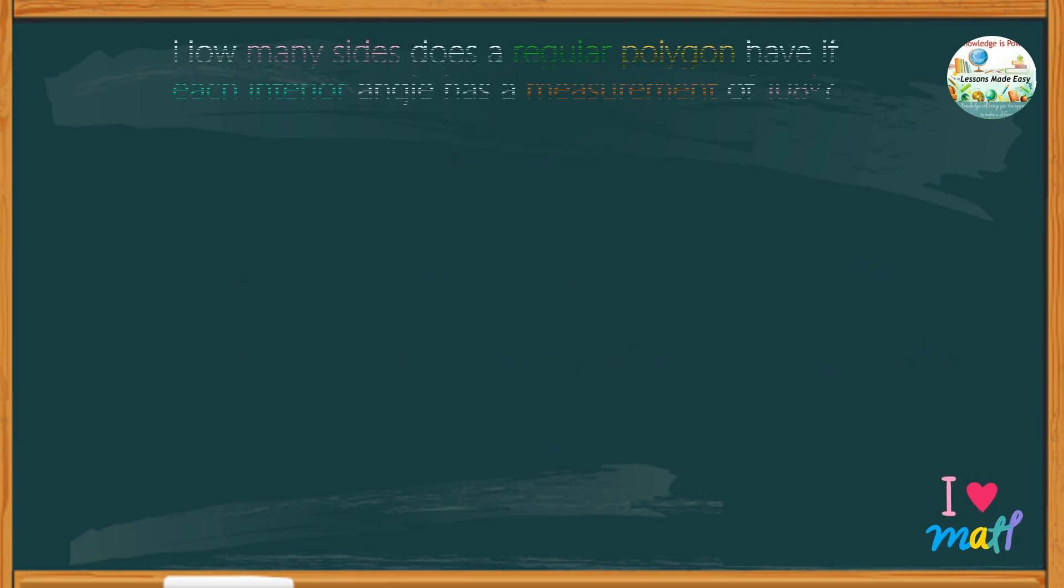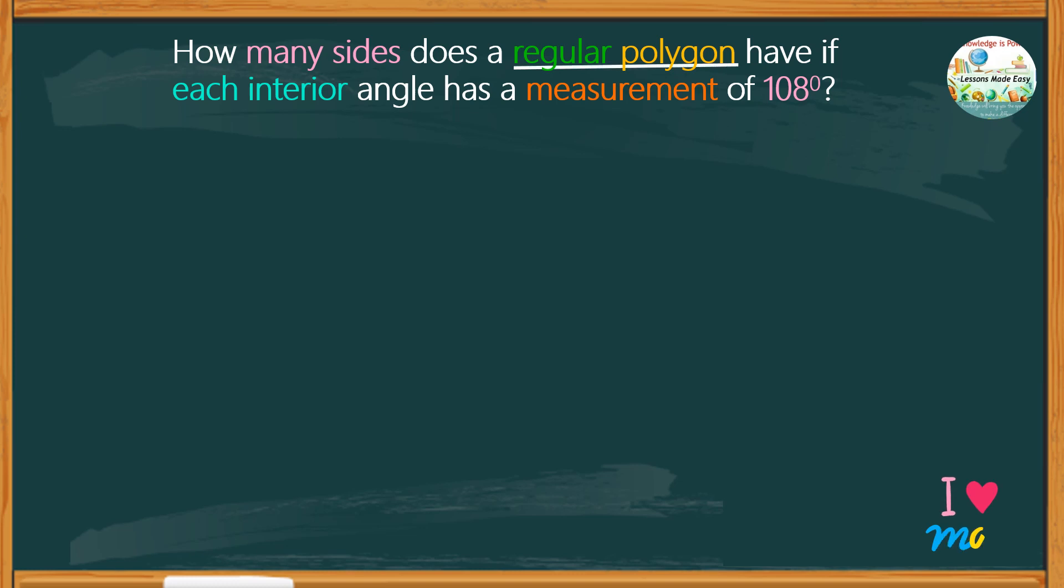Let's take a closer look at the given problem. There's a certain regular polygon with an unknown number of sides. The problem states that each interior angle measures 108 degrees. How can we make use of this detail to identify the number of sides of this polygon?